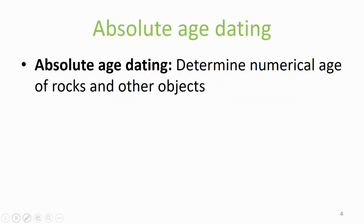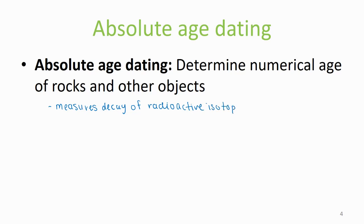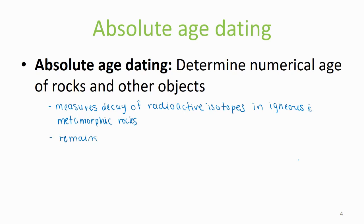Absolute Age Dating is determining the numerical age of rocks and other objects. When we do this, we measure the decay of radioactive isotopes in igneous and metamorphic rock. We can also measure the remains of some organisms preserved in sediment.